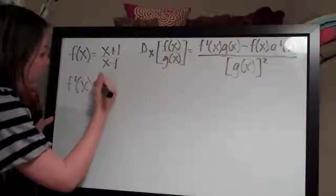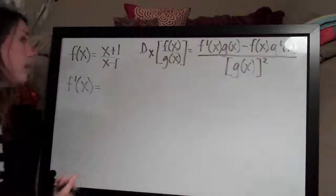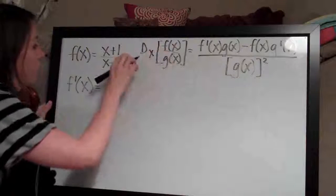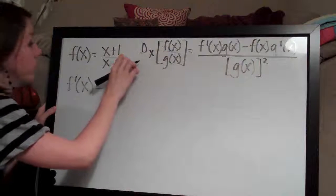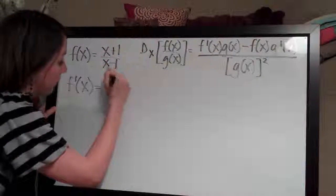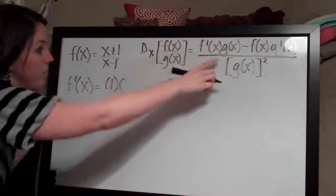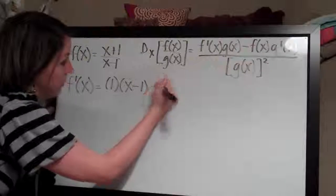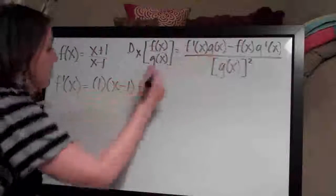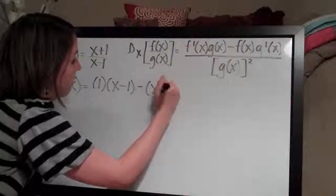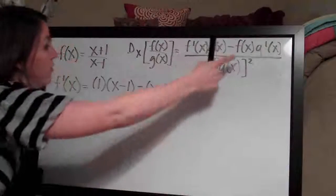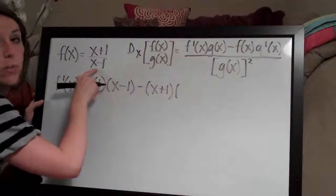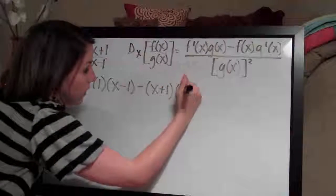We'll say f prime of x for the derivative equals the derivative of the top, so the derivative of x plus 1 which is just 1, times the bottom which is x minus 1, minus the top x plus 1 times the derivative of the bottom, which the derivative of x minus 1 is just 1, so times 1.